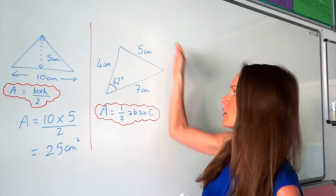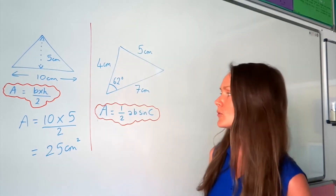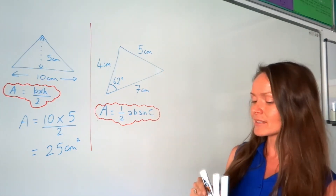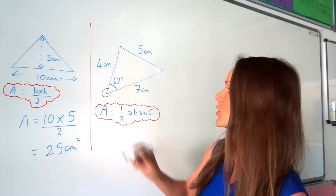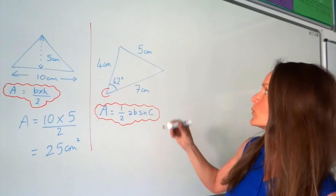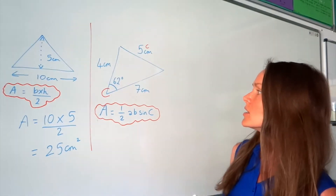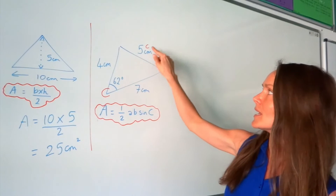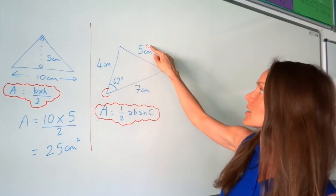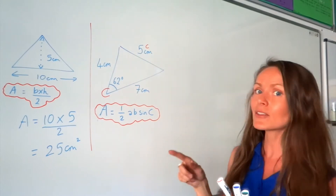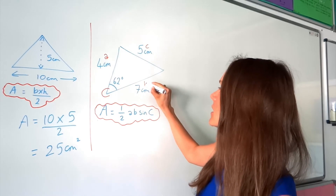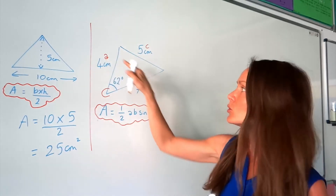Until we put this into practice it looks a little bit confusing. Capital C is the angle that we know in the question — so in this one, this is angle C. Side c would be the side opposite the angle; the angle is written as a capital letter and the side as a lowercase letter. The other sides are lowercase a and b, and it doesn't matter which way round you write those two.